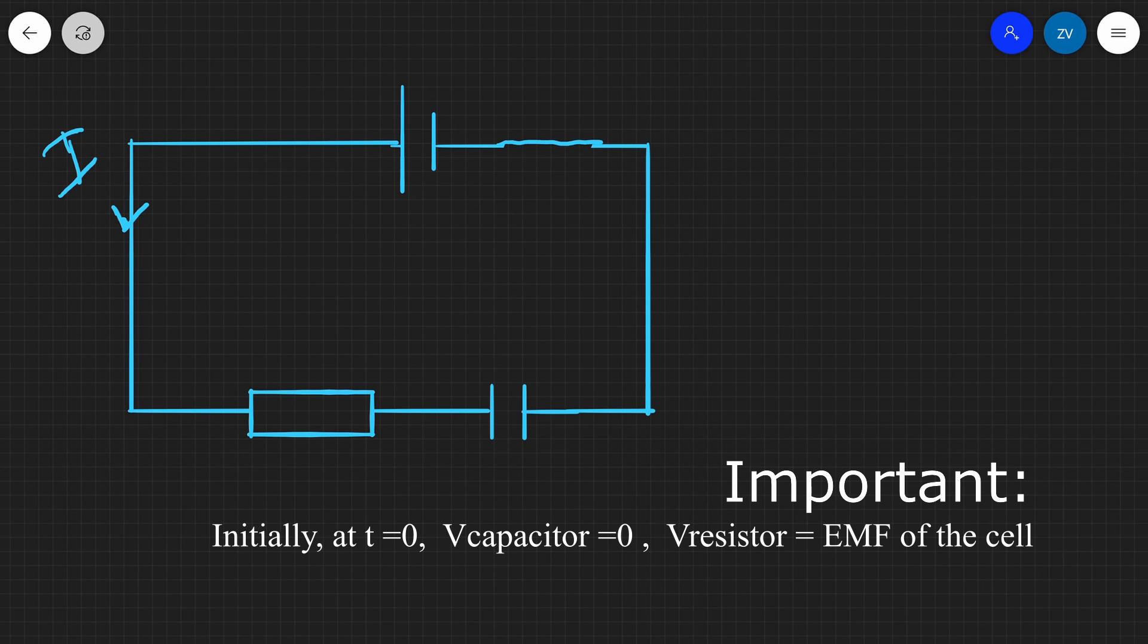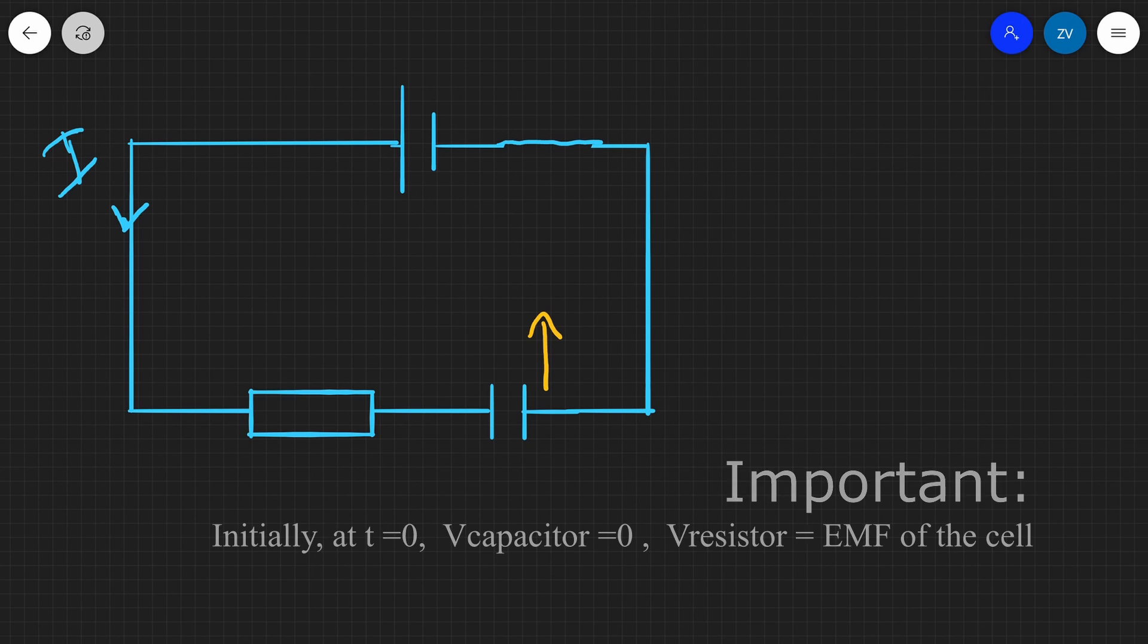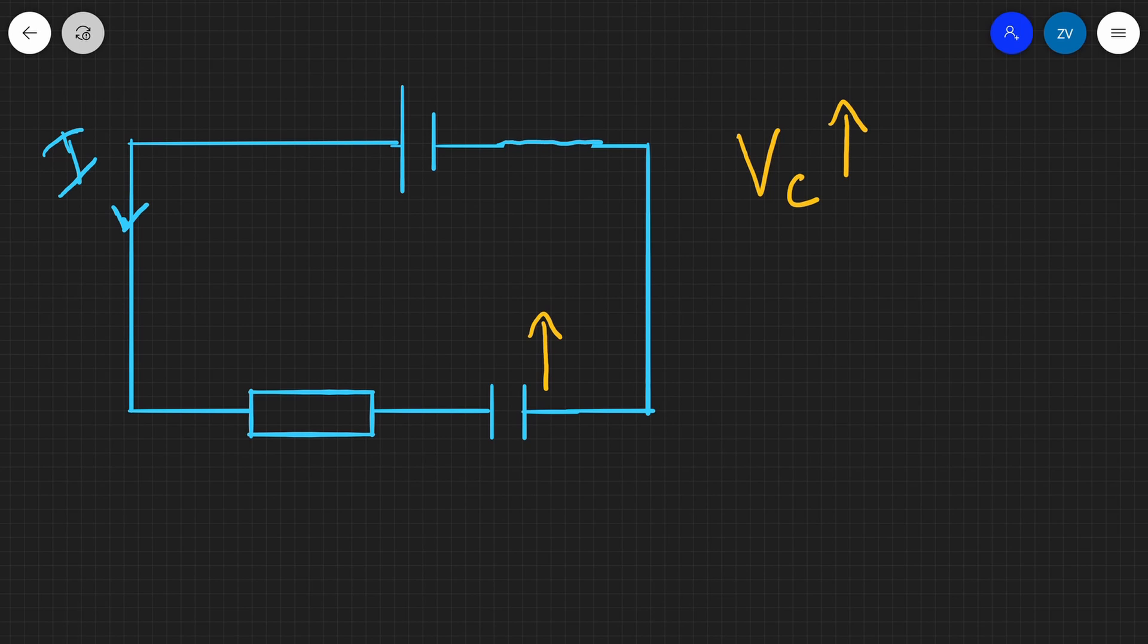As the capacitor is charging up, the charge on this capacitor will increase, meaning that the PD across it will also increase. Now, because the PD across the capacitor, let's say that the PD across the capacitor we're going to call that VC, that goes up due to Kirchhoff's second law.